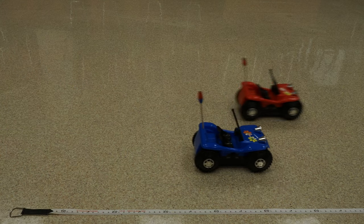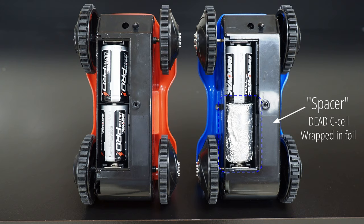You can make the constant velocity cars move slower by replacing one of the two C cell batteries with a spacer made out of a dead C cell battery wrapped in aluminum foil. I find it helpful to make similarly colored cars the same speed. For example, I make the red cars go fast with two C cells, and the blue cars go slow with one battery and one spacer.